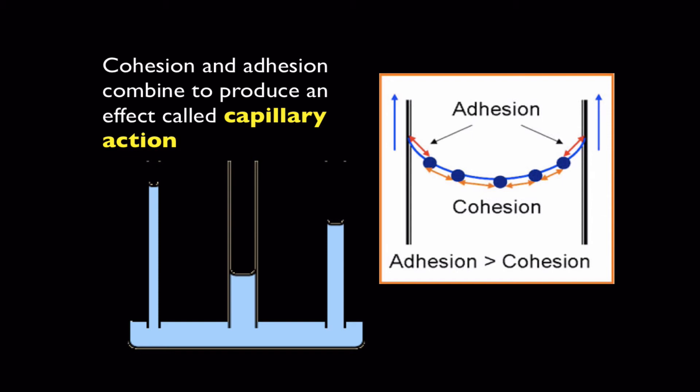Surface tension, which is produced by hydrogen bonds, is one effect, but we also have another effect which is called capillary action. Capillary action is simply the movement of water up a surface or up a thin tube, and you probably have heard of this in middle school when you talked about the meniscus.